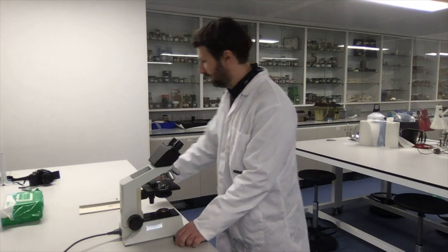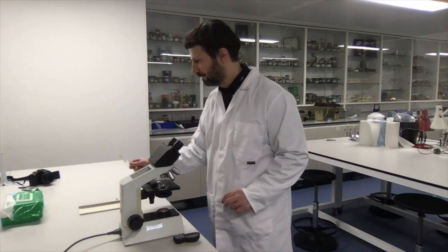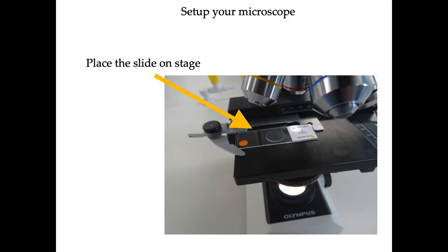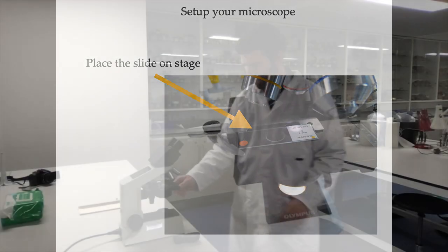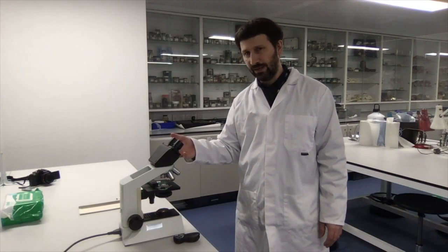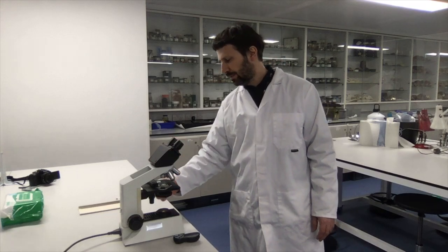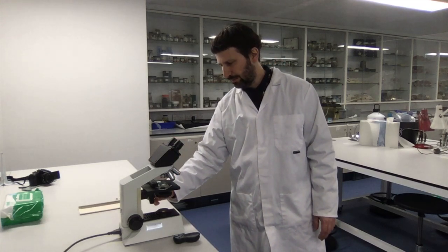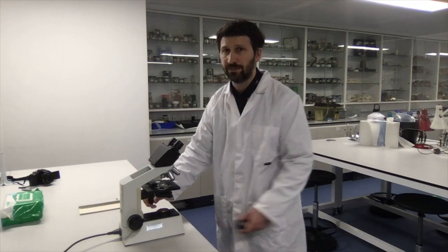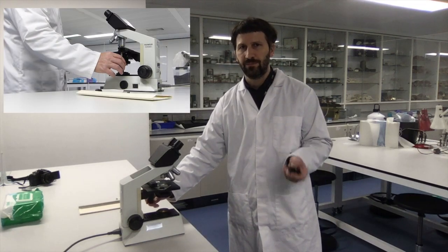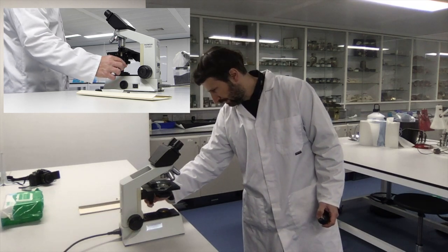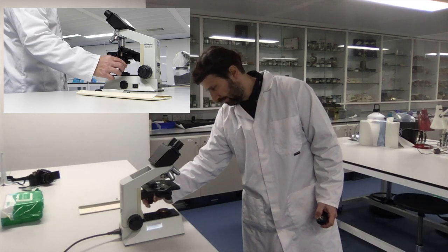Then you start by putting the microscope slide on the stage of the microscope, as I'm doing here. What you should do before even starting to look inside the oculars is set the position by moving these X and Y knobs to adjust the position of the slide on top of the light source.